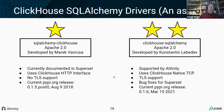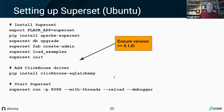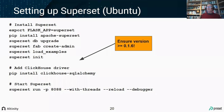Setting it up is easy. Follow the Superset install instructions — I do this in a virtual environment. Once Superset is set up, before kicking it off, run `pip install clickhouse-sqlalchemy` — you want version 0.1.6 or greater, which has the bug fixes mentioned. Then start Superset and you're off and running, ready to connect to ClickHouse through the UI.